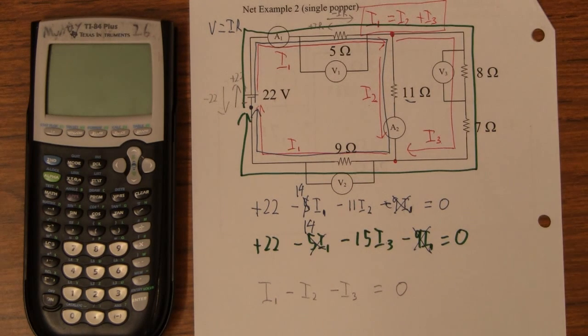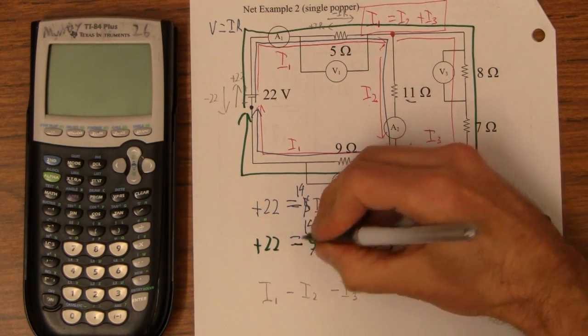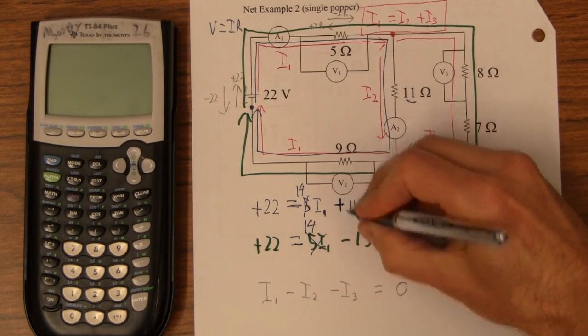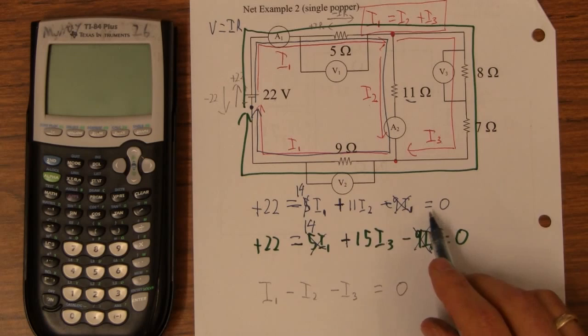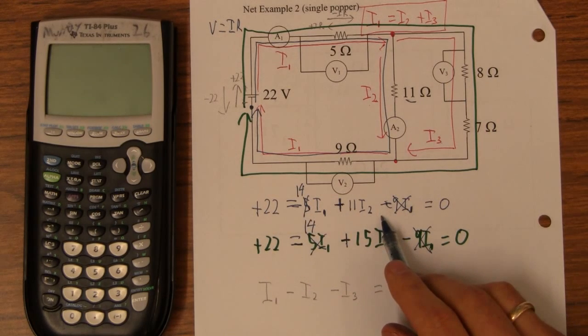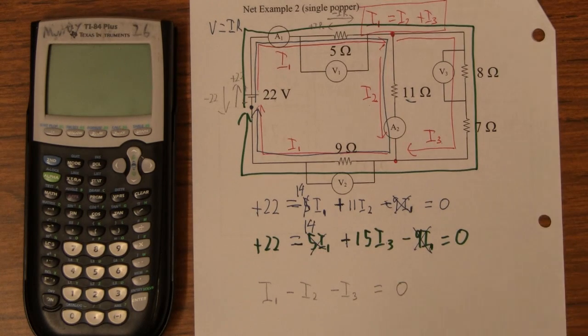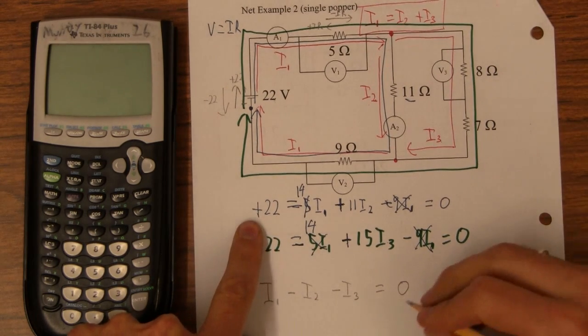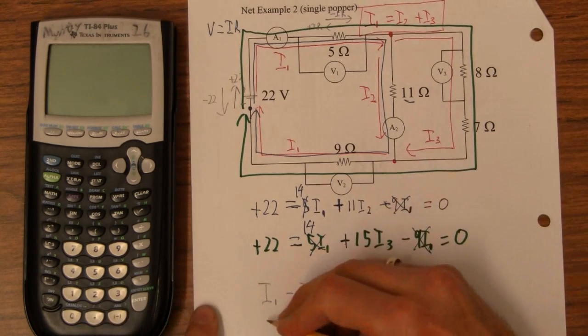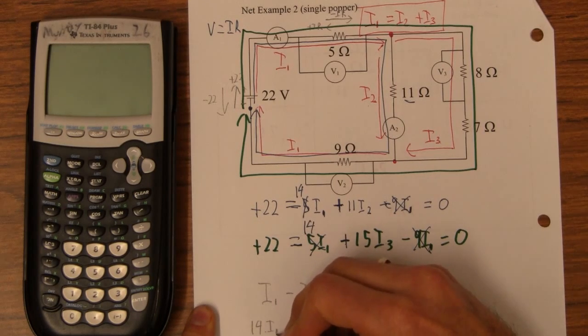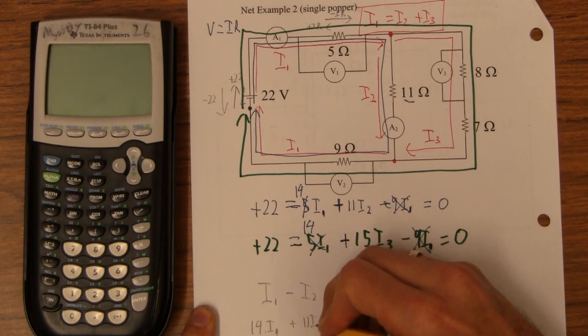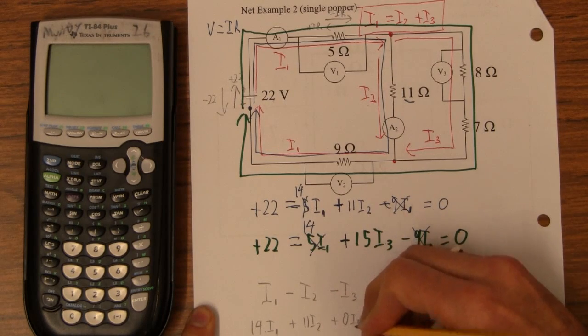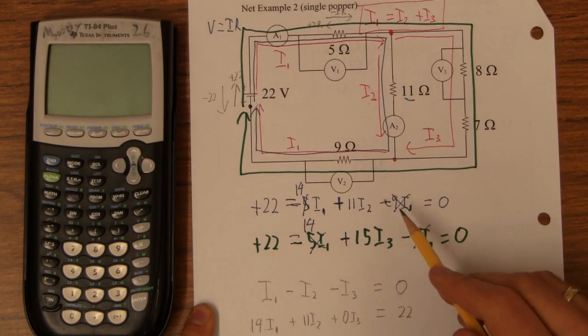And then notice that I can also do this. I can say 22 equals this, and then just make all these guys positive. Because basically all of this said that if we had 22 and then all of these were negative, that it added to 0. So I can say 22 equals all of these guys positive. Because ultimately I want these guys to be, I want a 22 on this side. So now I'm going to recast this guy. I'm going to put the 22 on this side. 14 I1, 11 I2 plus 0 I3 equals 22. That's that same equation that we had there.